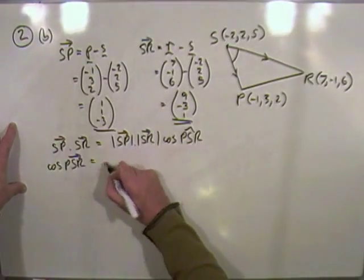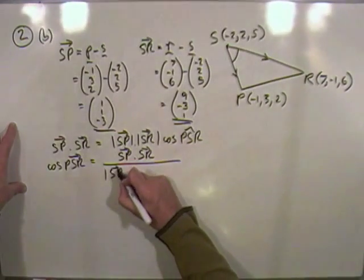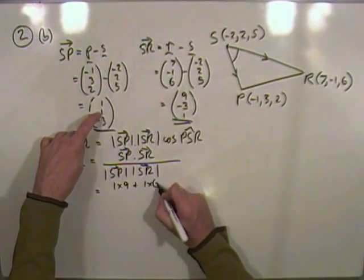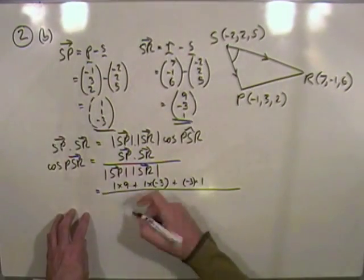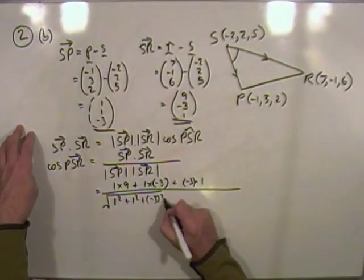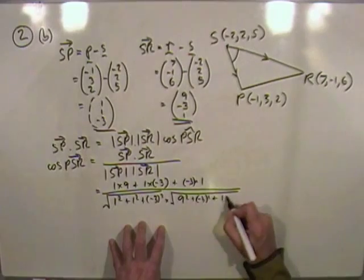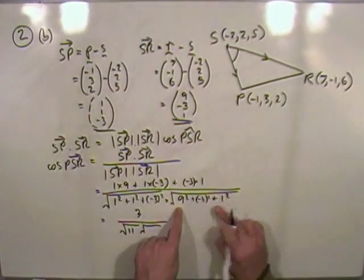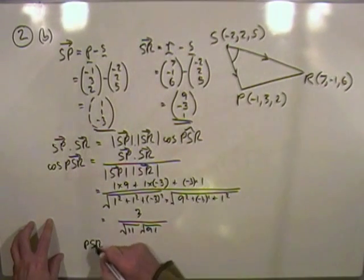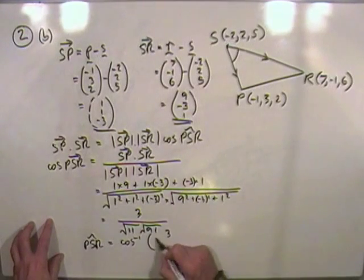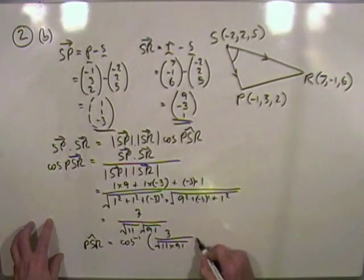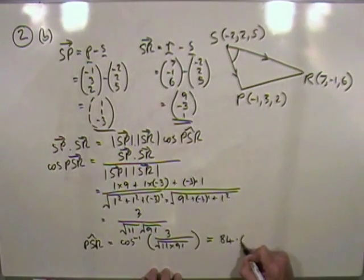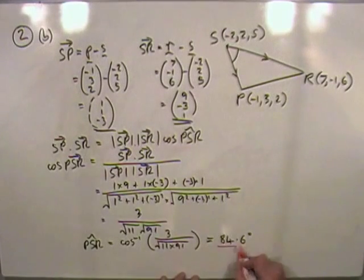Bring that over the other side. So cos P, S, R will be that scalar product S, P dot S, R over the two lengths, length of S, P, length of S, R. Now you do need to work out to the side and set it all out here. So scalar product, 1 times 9, 1 times negative 3, negative 3 times 1, all over the square root, length of the three dimensions, 1 squared plus 1 squared plus negative 3 squared, square root of this, 9 squared, negative 3 squared, and 1 squared. Right so what does that come to? Top part, you've got 9 take away 3 take away 3, that'll be 3. Underneath, square root of 1, 1 and 9, that'll be 11, square root of 81 and 10, that's 91. P, S, R is going to be the inverse cos of 3 over the square root of 11 times 91, which equals, when you put it into your calculator, 84.6 degrees. Done.